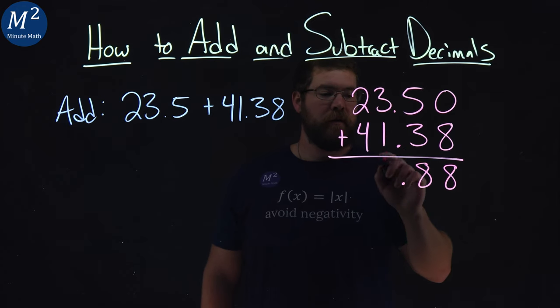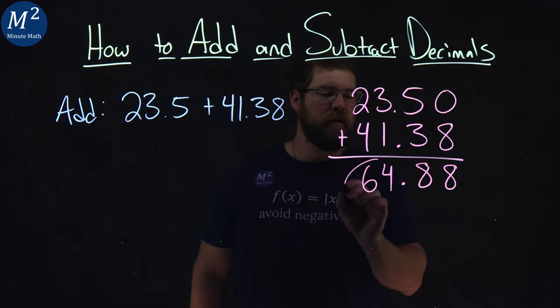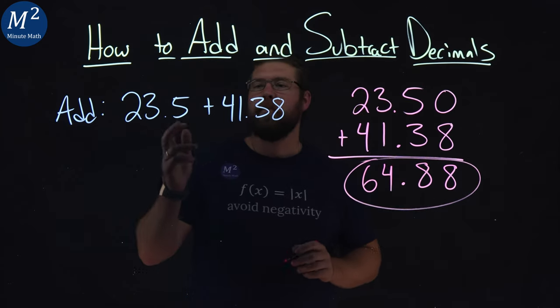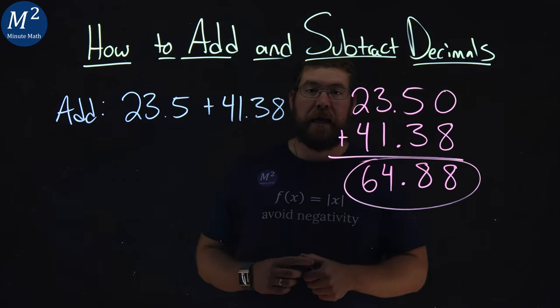3 and 1 are 4. And 2 and 4 are 6. And so, 23.5 plus 41.38 comes out to be 64.88.